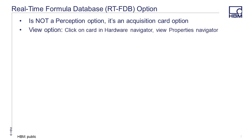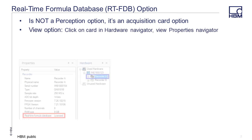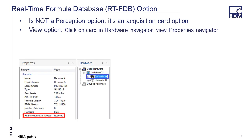To view if a card has the option installed, click on the card in the Hardware Navigator — shown in blue — and view the results in the Properties Navigator, shown in red. The results will either state Licensed or Unlicensed.